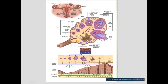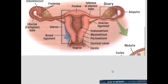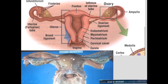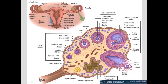In the uterus there is a stratum functionalis, which changes with hormones, and the stratum basalis, which pretty much stays the same. The main structures include the uterus, uterine horns, ovaries, and the ampulla and isthmus of the fallopian tube. The uterus has a lining called the endometrium, then the myometrium as the muscle layer, and the perimetrium is the serosa on the outside. Below that is the cervix and the vagina.